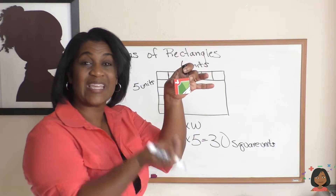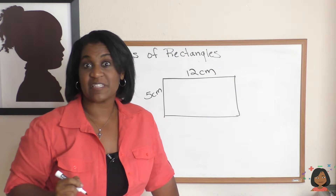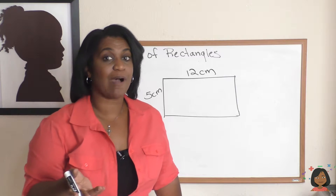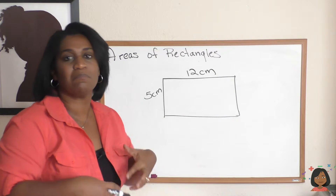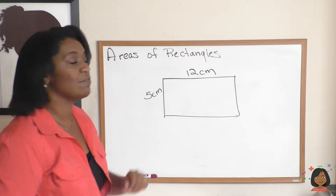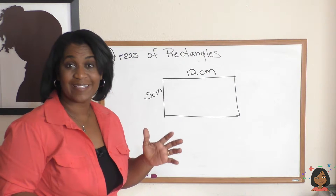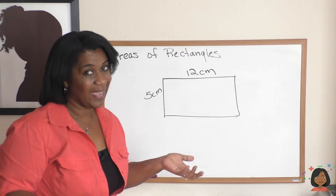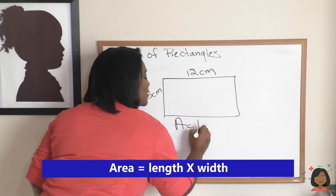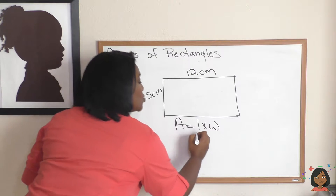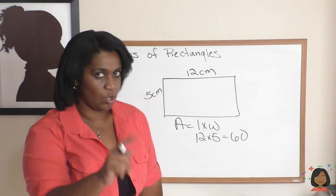Let's try another problem. When we usually see area problems it'll look more like this — instead of saying 'units' they'll say centimeters, inches, or meters. I have a rectangle that is twelve centimeters long and five centimeters wide. Remember the formula: area equals length times width. Let's fill it in: twelve times five equals sixty. But are we done? No!